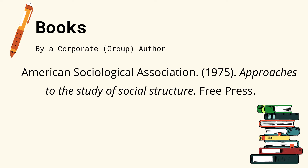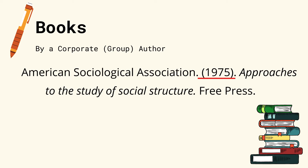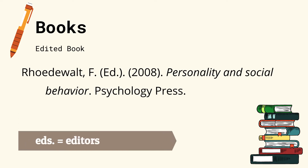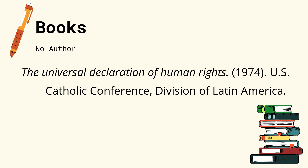For books by a corporate or group author, replace the name of the author with the group or organization's name — for example, American Sociological Association, 1975 — then just follow the guidelines for writing the rest of the details. For edited books, insert Ed. period after the name of the author, where Ed. means editor. If an entire edited book with author chapters is cited, the editor is listed as the author with the abbreviation Ed. after his name, or Eds. if there are multiple editors. For books with no author indicated, begin with the title of the article and then write the rest of the available details.